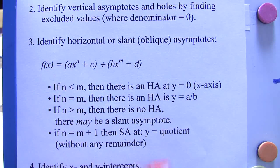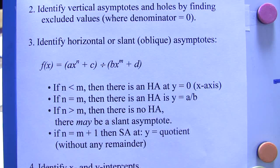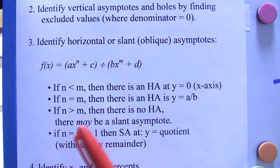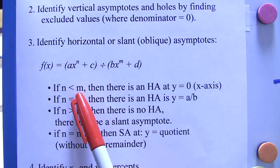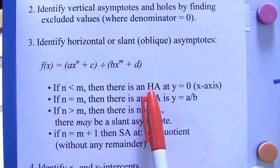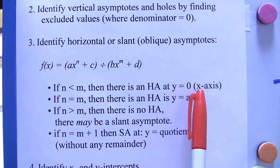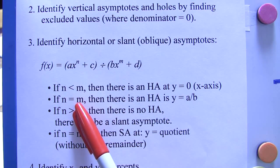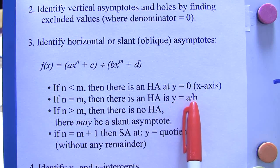You may want to make a little card of this. If n is less than m, then there's a horizontal asymptote at y equals 0, which is also the x-axis. If n equals m, then there's a horizontal asymptote at y equals a over b.